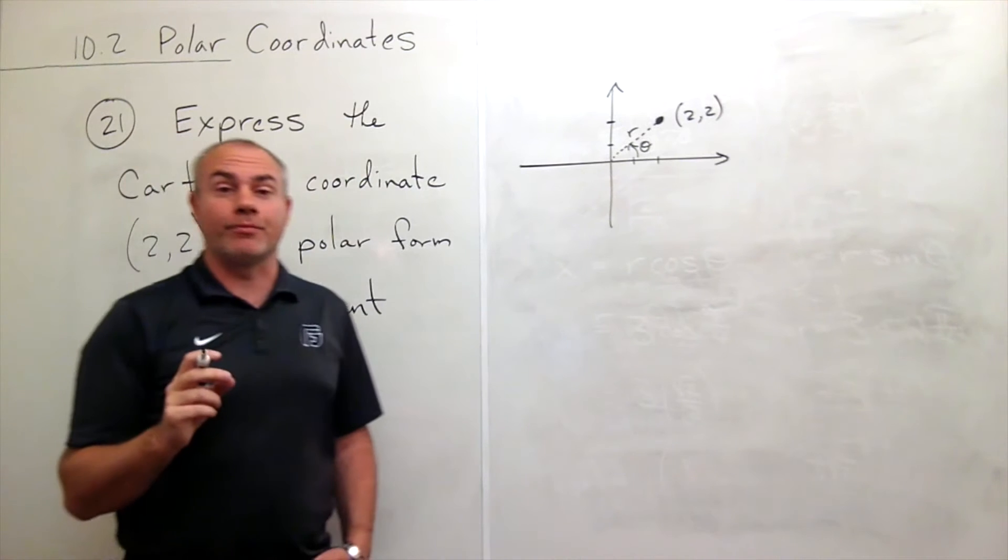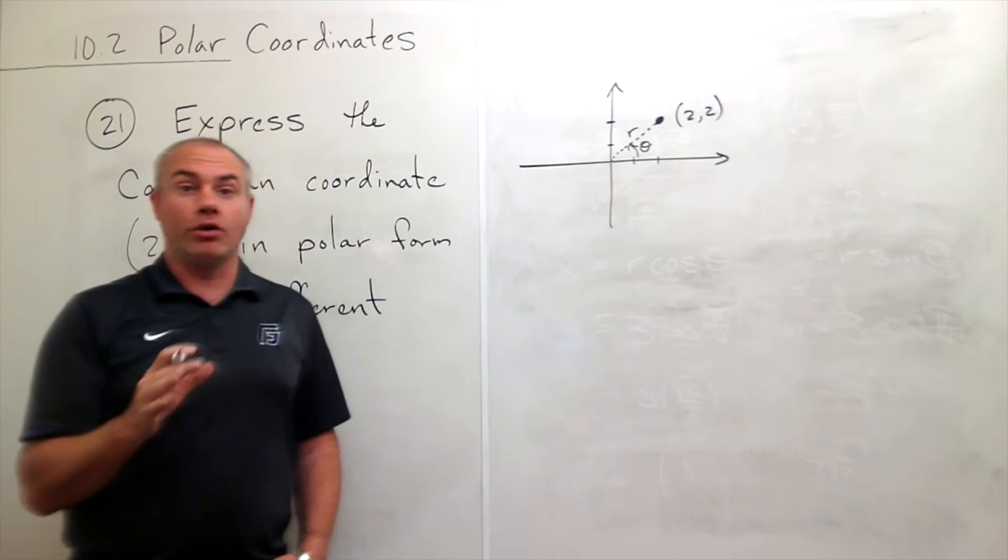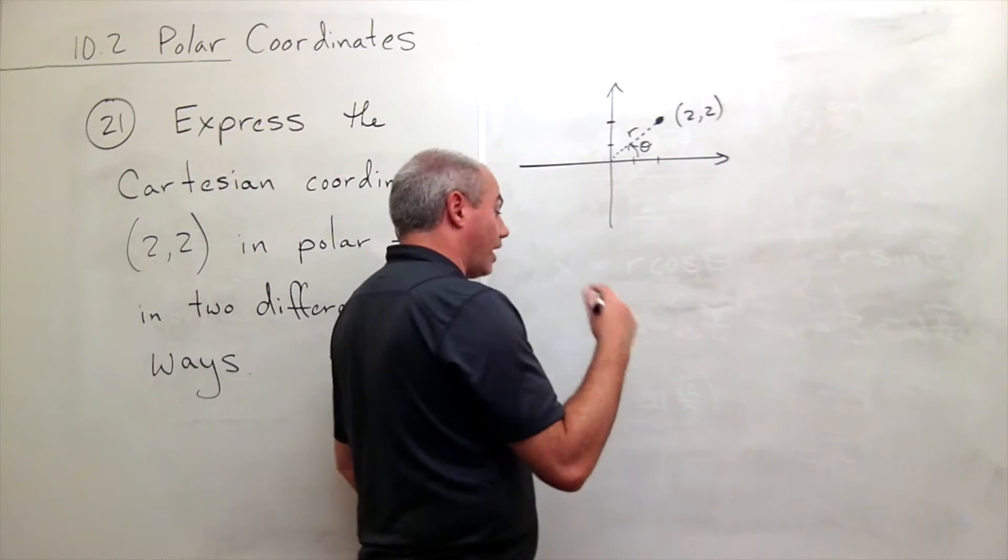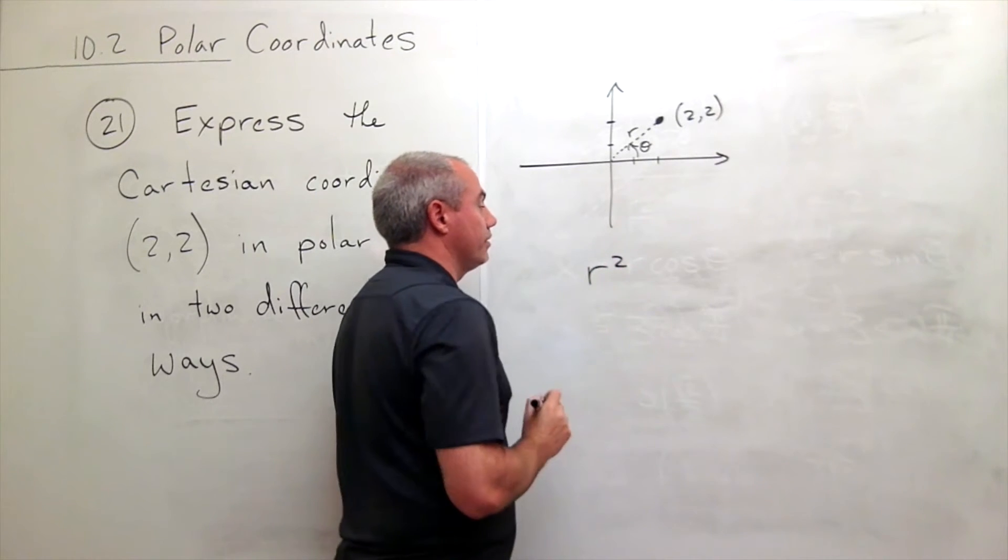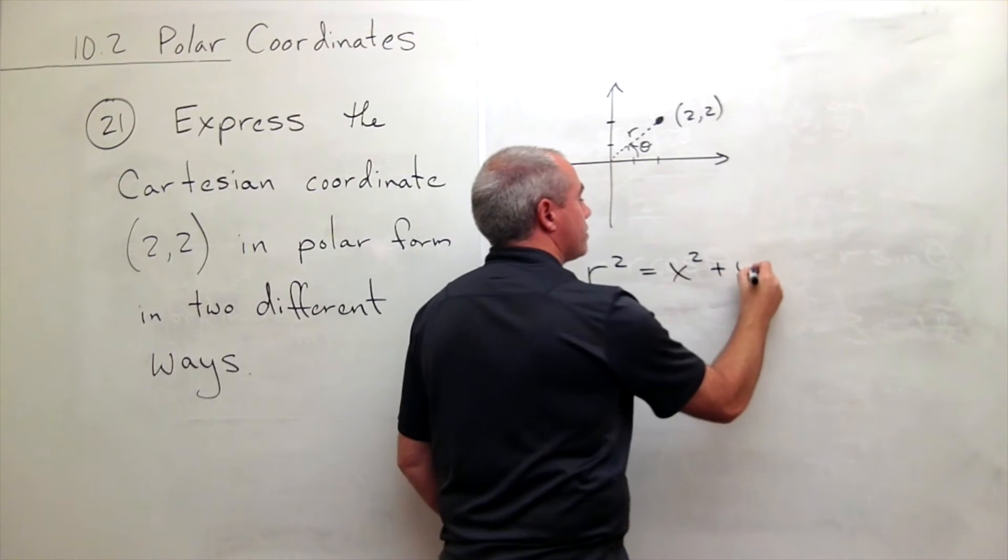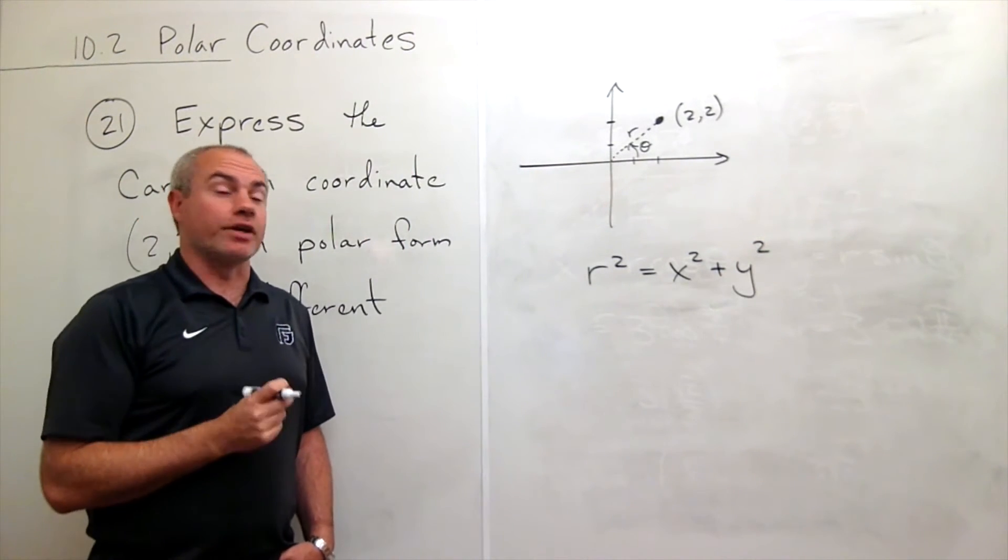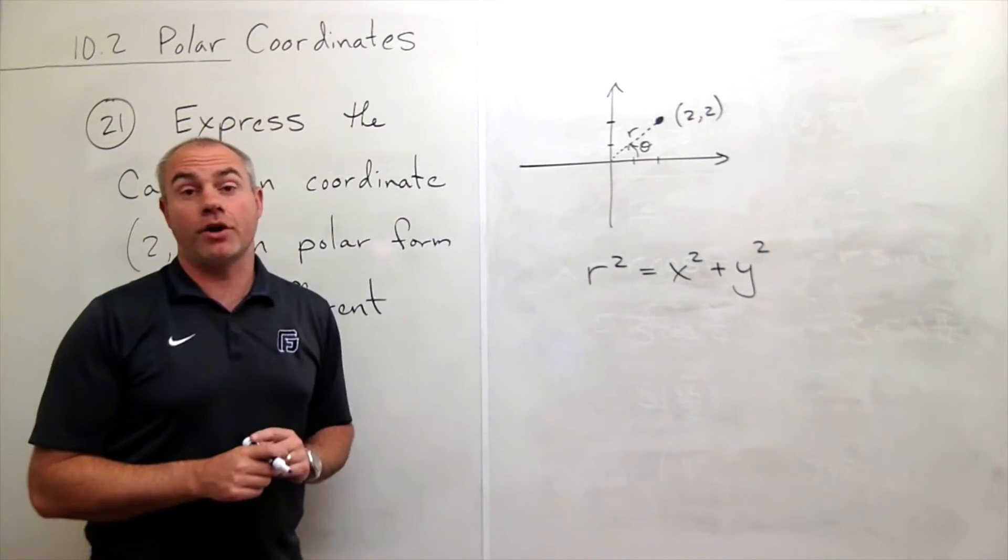One thing that's going to be helpful for me is one of the conversion formulas between polar and Cartesian coordinates, and one of those conversion formulas is the following: that r² is equal to x² plus y². Okay, this is going to help me because I know what x is and I know what y is. I want to know what r is.